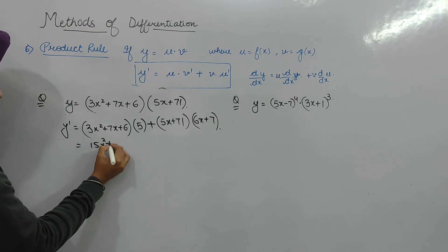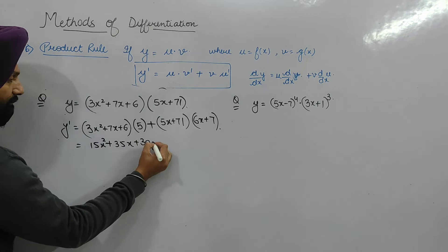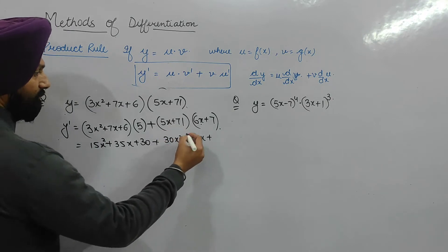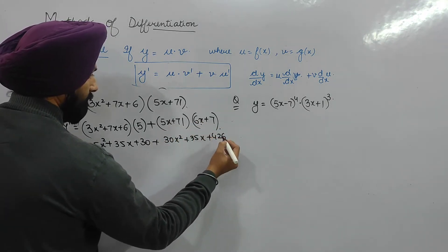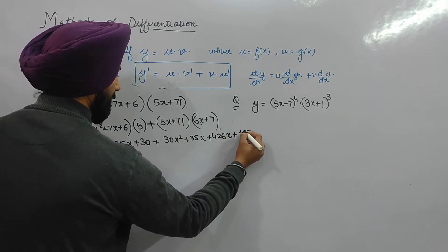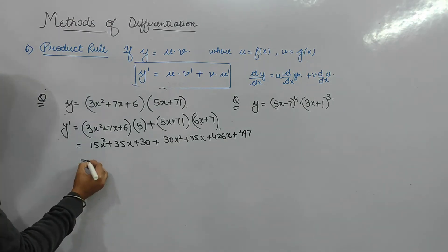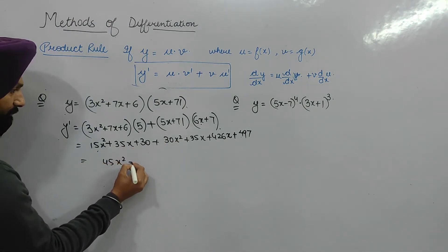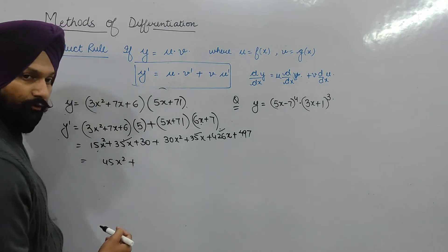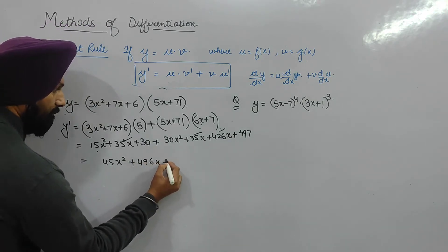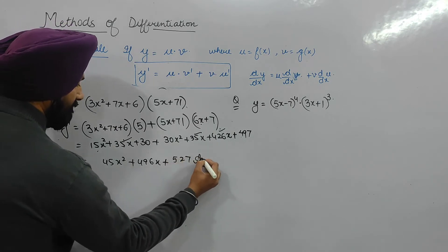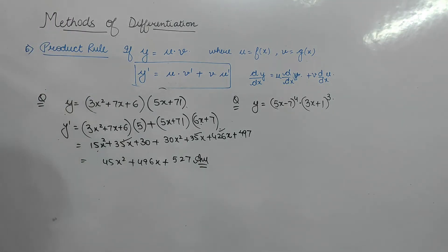Expanding: 15x² + 35x + 30x² + 35x + (71 × 6) + (71 × 7). Adding like terms: 15 + 30 = 45x², 35x + 35x = 70x, and the constants 420 + 497 = 527. The final answer is 45x² + 70x + 527.